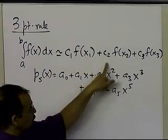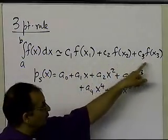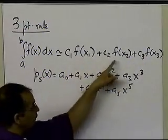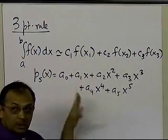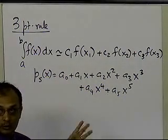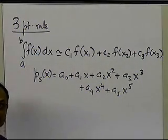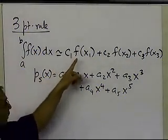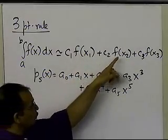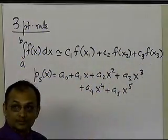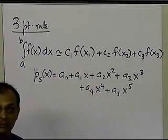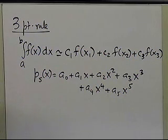Then you substitute the values of the function at x1, x2, and x3 into that expression, equate the two, and you will get six equations and six unknowns. You will be able to find out what c1, x1, c2, x2, c3, and x3 are. That's how you develop any kind of two-point rule or three-point rule.